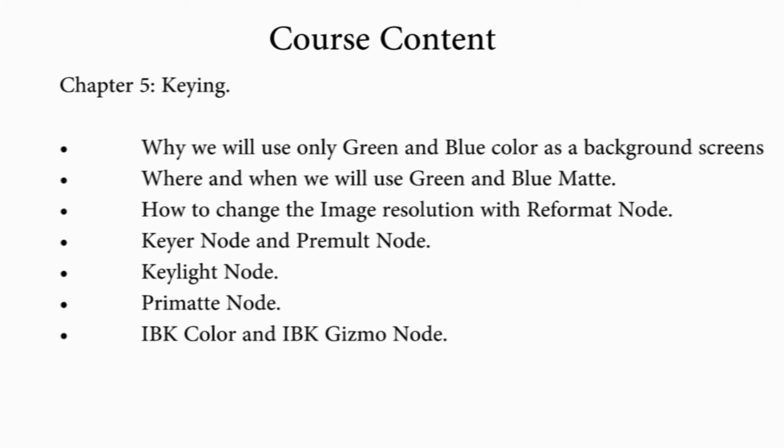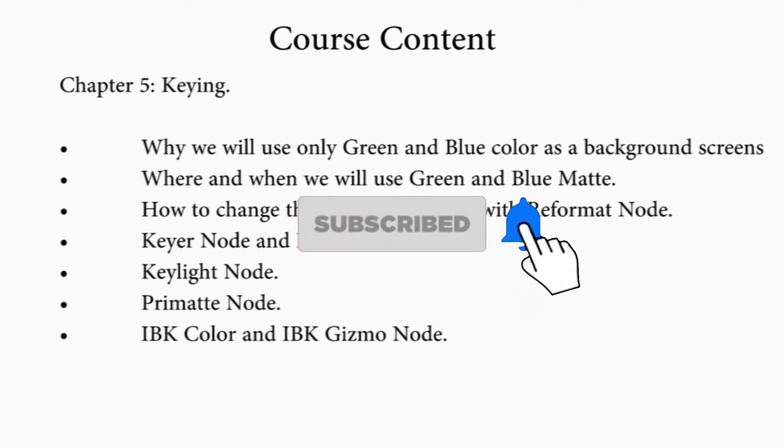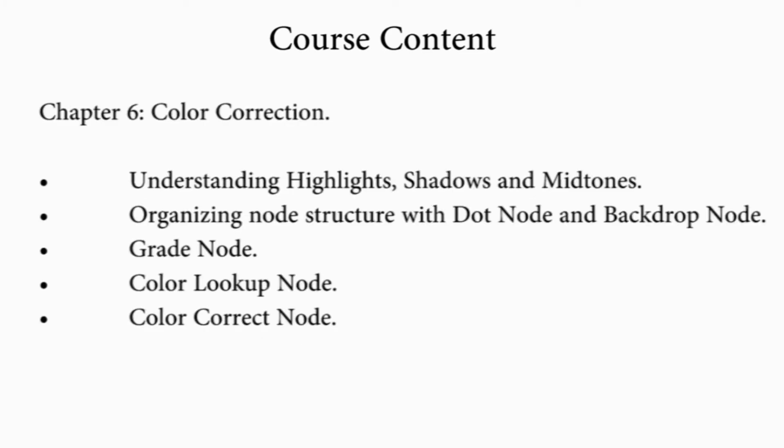The next topic deals with keying. You will completely understand why we use only green and blue colors as a background screen, and where and when we will use green and blue mattes. You will also learn how to change the image resolution with the reformat node, and you will learn completely about the keyer node, primal node, keylight node, premat node, and finally IBK Colors and IBK Kizmo nodes.